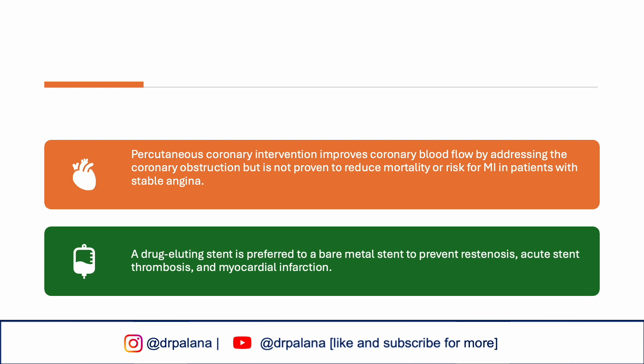PCI improves coronary blood flow by addressing the coronary obstruction, but is not proven to reduce mortality or risk for MI in patients with stable angina. A drug-eluting stent is preferred to a bare metal stent to prevent restenosis, acute stent thrombosis, and MI.